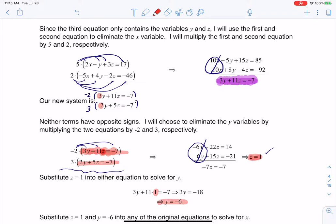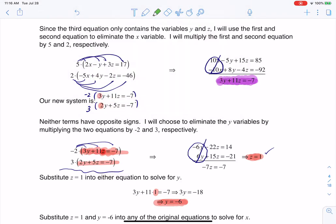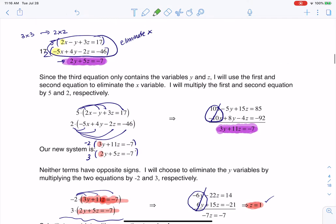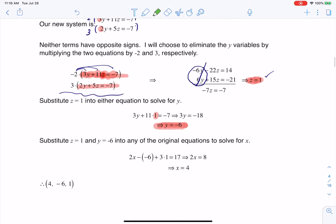Then I'll take z equals 1 and y equals negative 6 and substitute them back into any of these equations. I'm going to scroll up. I could substitute into this one or this one, it doesn't matter. Dealer's choice. I opted for the first one.